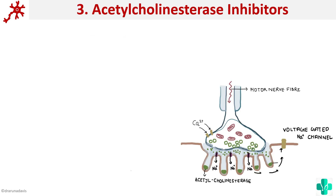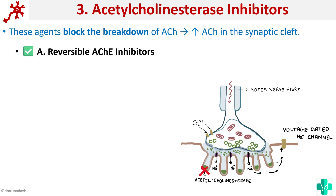Moving on to the third class of drugs: the acetylcholinesterase inhibitors. They basically inhibit the enzyme acetylcholinesterase, so whatever acetylcholine is released will continue to bind to its receptor and continue to activate the sodium channels. Because of this continuous activation of voltage-gated sodium channels, after some time there will be inactivation of the sodium channel and the muscle membrane will go into a refractory phase. We can classify them into reversible acetylcholinesterase inhibitors as well as irreversible acetylcholinesterase inhibitors. Both types inhibit acetylcholinesterase so that there is increased accumulation of acetylcholine in the synaptic cleft.